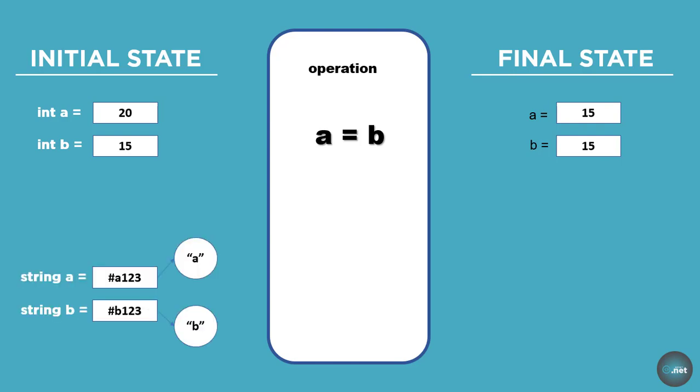So let us say we define that string a is equal to a and string b is equal to b. In this case, the string a will hold the reference or the address of that value in memory, not the value itself. Let us assign the b to a and this is how the final state would look like. So string a and string b, they both point to the same value by assigning the reference.